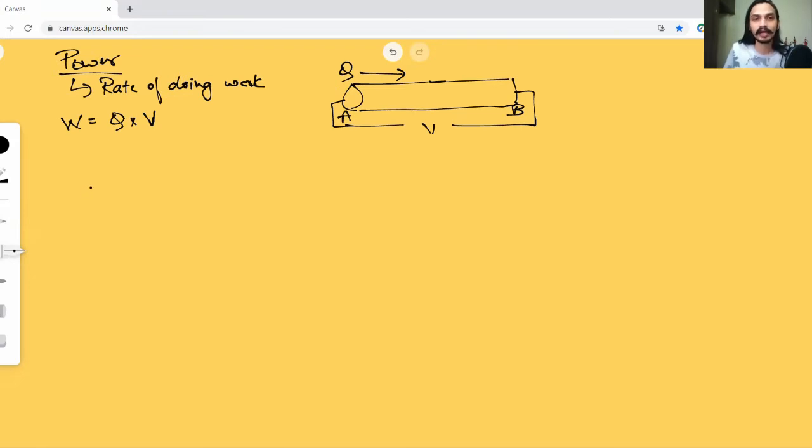Now, if this is the work done, then how do I find the power? We know one thing since we said power is rate of doing work. I'll say power is nothing but work divided by time. So, if that is the case, I'll say power equals to work is nothing but Q into V divided by T. Now, if I have to simplify this, I'll say P equals to Q by T into V. So, if I take Q by T, we know charge divided by time. That is basically we are talking about current. So, I can say that the power is nothing but the product of the potential difference and the current that is flowing due to that potential difference. That will give us the power.